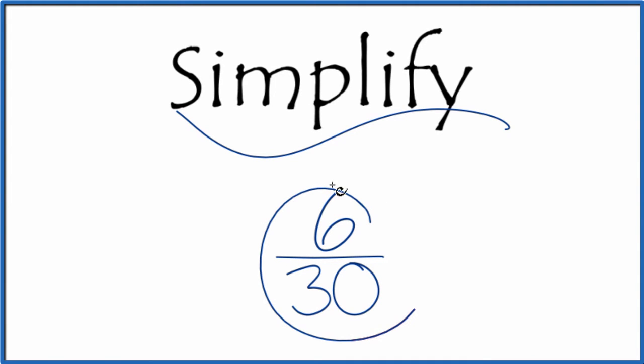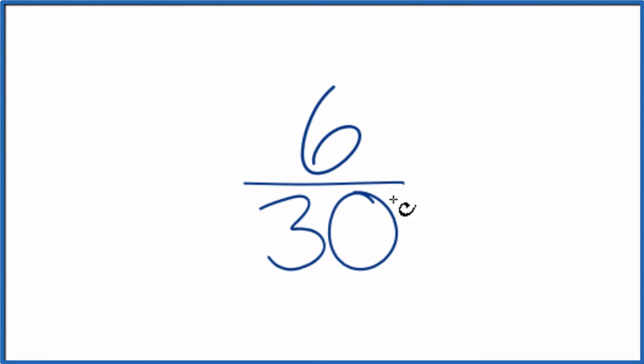If you need to simplify 6 thirtieths, here's how you do it. What we're trying to do is find another fraction that's the same. It has the same value as 6 over 30, it's just that we've reduced it to lowest form.